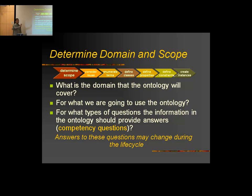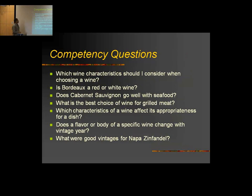It's important to define what questions the ontology should be able to answer — that's critical from our experience to understand from the beginning. For the wine scenario: what wine characteristics should we consider when choosing a wine? Is the body of a wine red or white? Does this particular wine go well with seafood? Using this set of competency questions as a template, we keep them in mind before starting the ontology engineering steps.